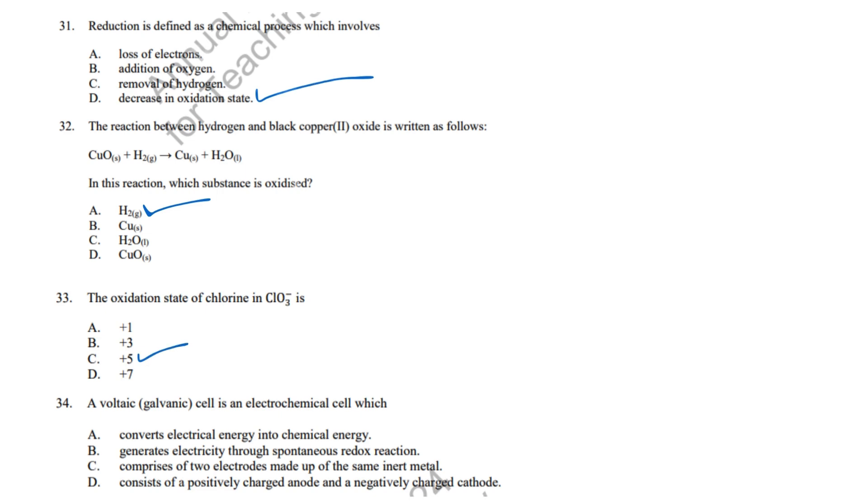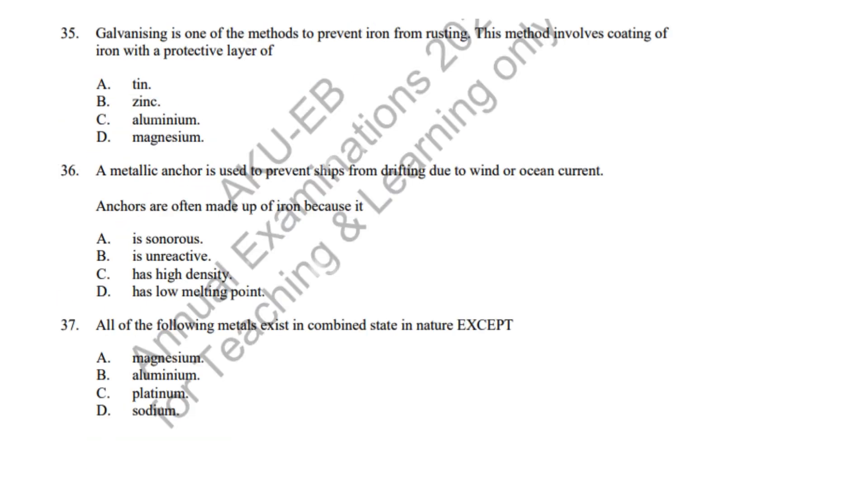Question 34: Galvanic cells generate electricity via spontaneous redox reactions. Correct answer: B, Generates electricity through spontaneous redox reaction. Question 35: Zinc forms a protective layer over iron to prevent rusting, galvanizing. Correct answer: B, Zinc.